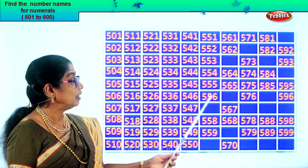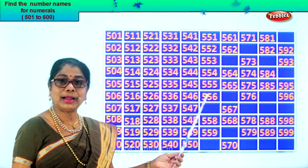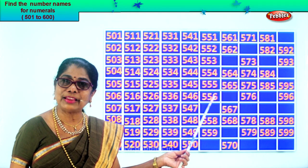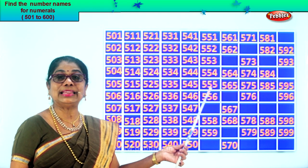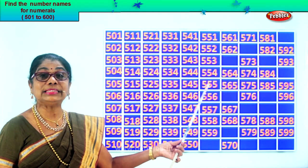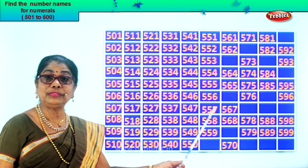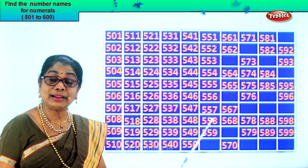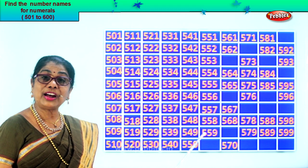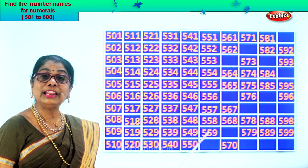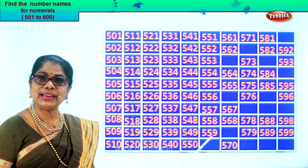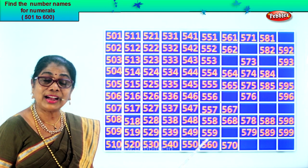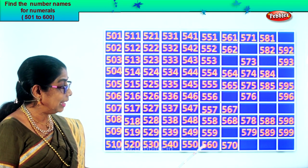555. 556. After 6 comes 7. After 56, 57. 557. 558. 559. After 59, 60.